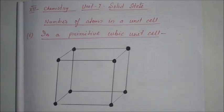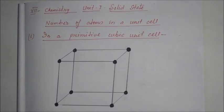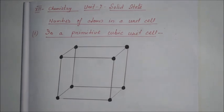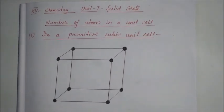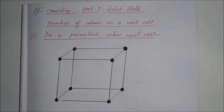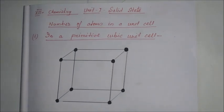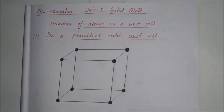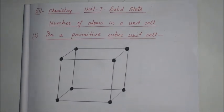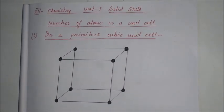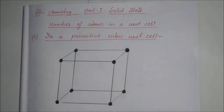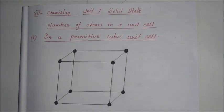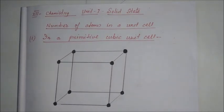We know about the crystal lattice — it is made up of a very large number of unit cells, and every lattice point is occupied by one constituent particle, which may be an atom, molecule, or ion. We have also read about unit cells and their types, like the primitive and centred unit cell. Today we will discuss the number of atoms in a primitive cubic unit cell, a body-centred cubic unit cell, and a face-centred cubic unit cell.